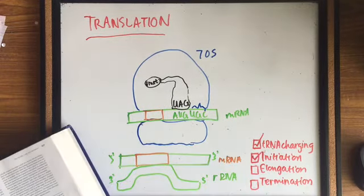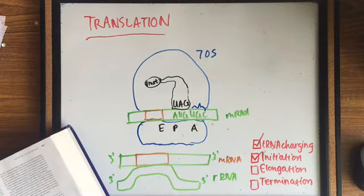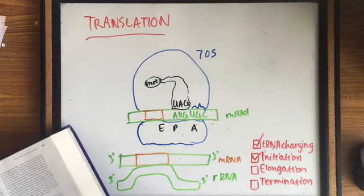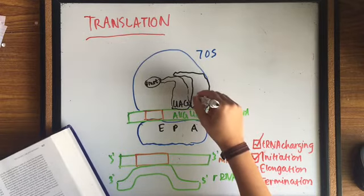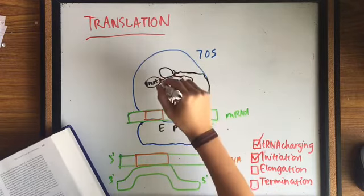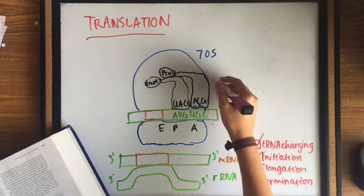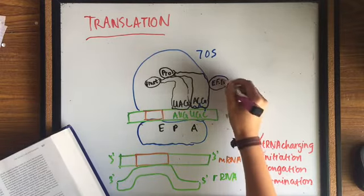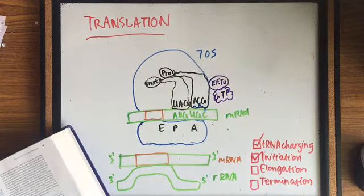fMet tRNA occupies the P-site of the ribosome, and then the EF-Tu-GTP and charged tRNA form a complex that enters the A-site of the ribosome. After the charged tRNA is placed into the A-site, GTP is cleaved to GDP, and the EF-Tu-GDP complex is released.